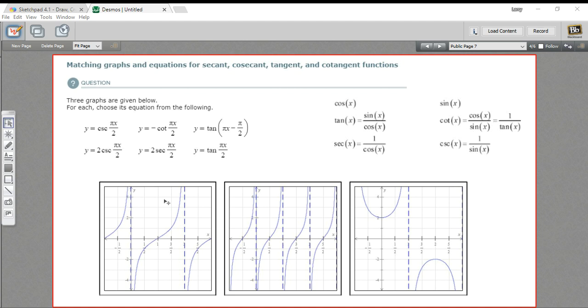First, I think we need to know something about the basic shapes of these trigonometric functions. We've got up here cosecant, cotangent, tangent, secant. Those are our options.